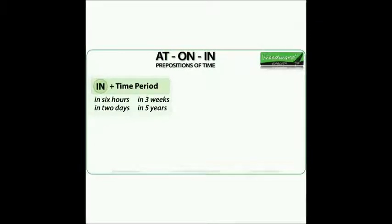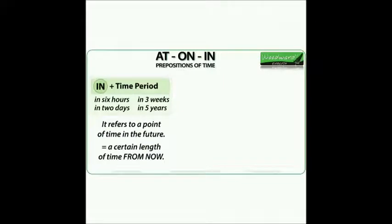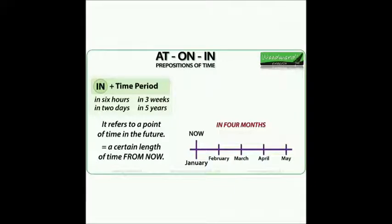We use the preposition 'in' with a period of time. We say: in 6 hours, in 2 days, in 3 weeks, in 5 years. 'In' plus a time period can refer to a point of time in the future — it shows a certain length of time that starts now, and usually at the end of that time period something will happen. For example, if it is now January and I say I'm going to Japan in 4 months, the point in the future is 4 months from now. This means I will travel in May.